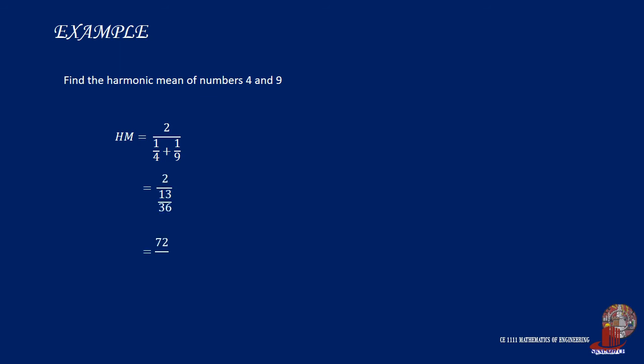The other method is employing the equation HM equals 2ab over a plus b, which would then turn out as 2 by 4 by 9 over 4 plus 9, which would still yield the same answer of 5.54.